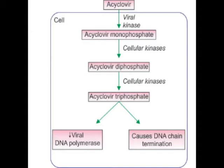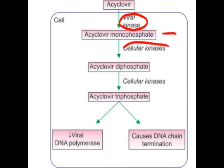When acyclovir enters the cell, the enzyme viral kinase — not the host cell kinase, but specifically the viral kinase — is responsible for converting it into the monophosphate form. That is, the phosphorylation of acyclovir is performed first by viral kinase.